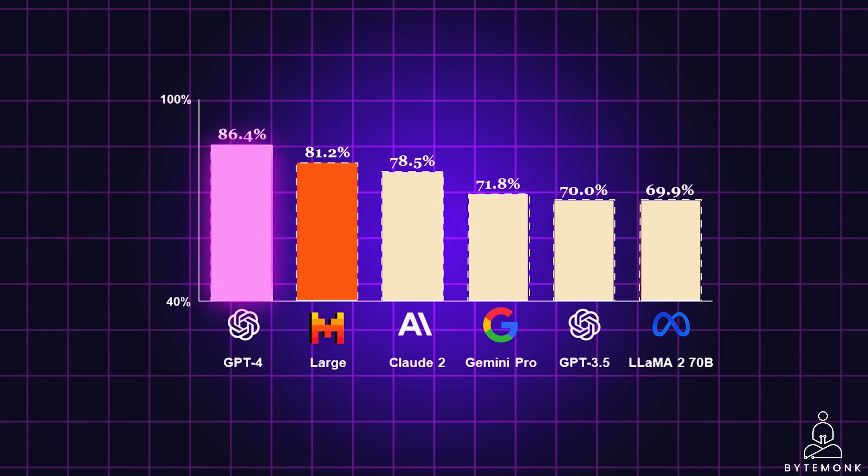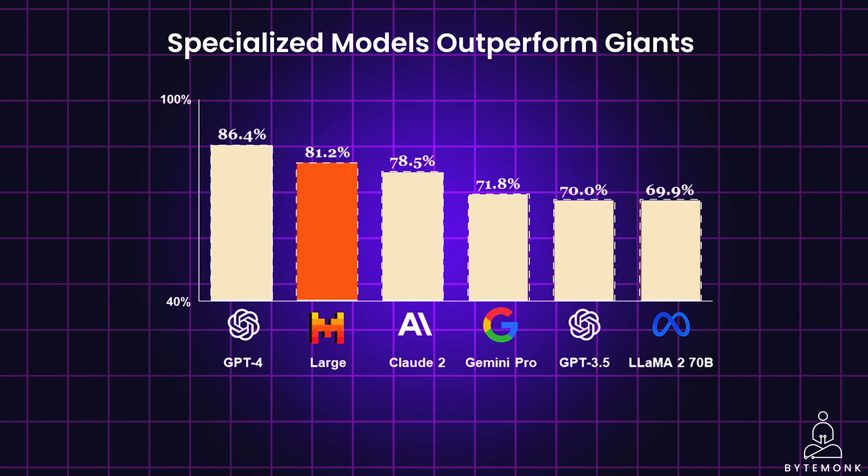So, instead of defaulting to the largest model available, the focus is on selecting the model that aligns best with the specific problem. Interestingly, smaller models trained on domain-specific data can outperform much larger general-purpose models. This is like the value of consulting a specialist versus a journalist. Because expertise always wins.